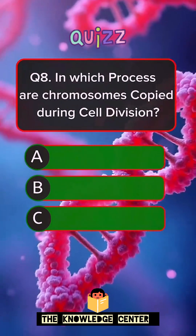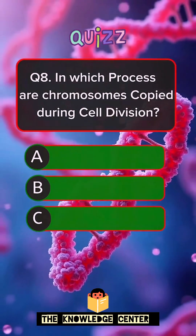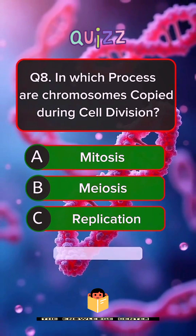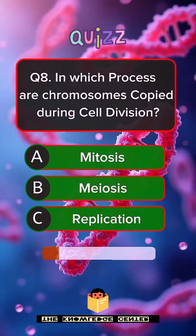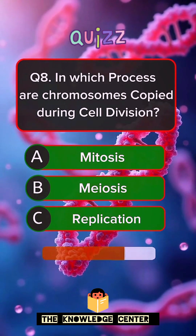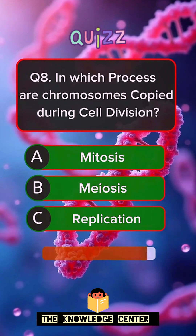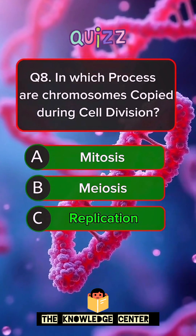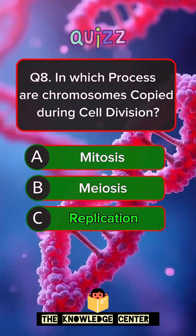Question 8. In which process are chromosomes copied during cell division? Answer C. Replication.